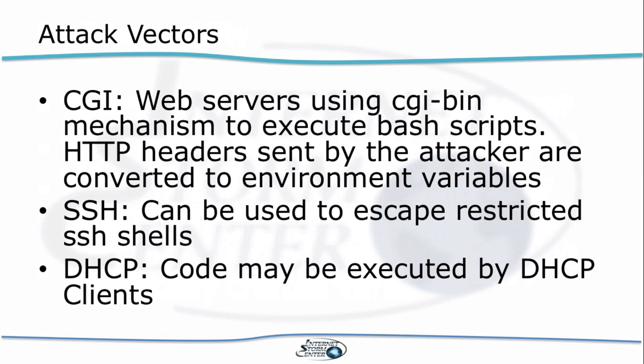Other attack vectors that have been mentioned include SSH. With SSH, the user can set environment variables. Typically that's not a big deal because the user has to authenticate, but sometimes we try to restrict the user to a limited shell — with this vulnerability, they may be able to execute commands we don't want them to execute. Also with DHCP, many Unix systems pick up parameters from DHCP, set environment variables, and then run Bash scripts to reconfigure the system. This is not as easily exploitable, but if it is exploitable, those exploits usually run as root.